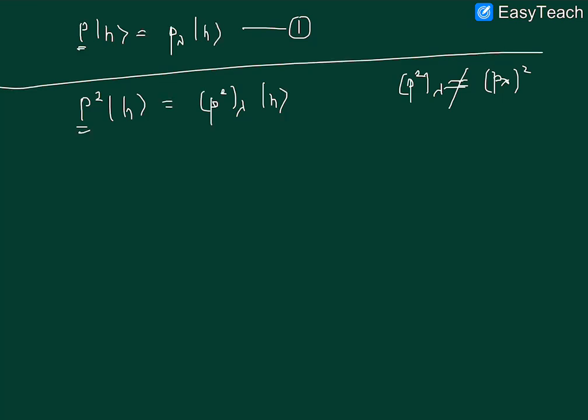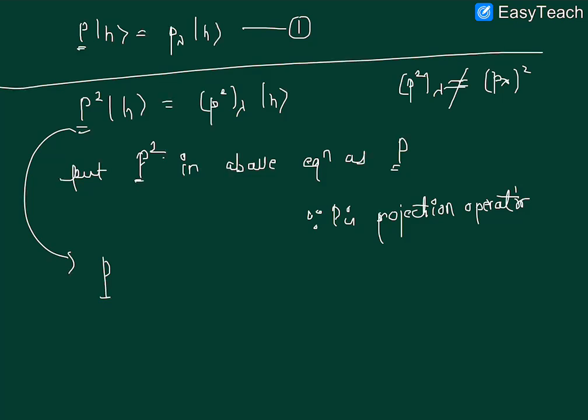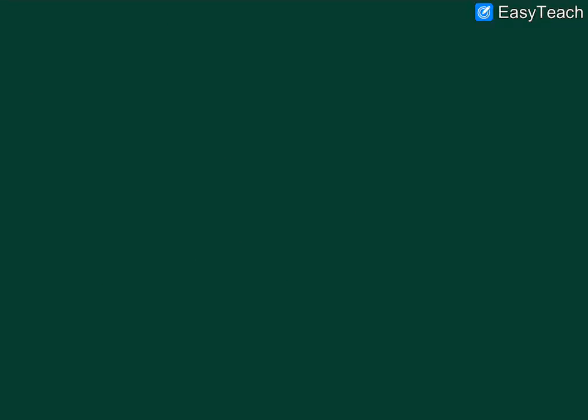Now we proceed ahead. Now put P^2 in the above equation as P, since P is a projection operator. So this becomes P applying on |h⟩ gives me P^2_λ|h⟩, and this is my equation two. So this is my path two.